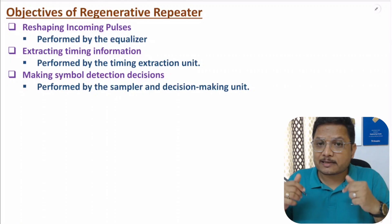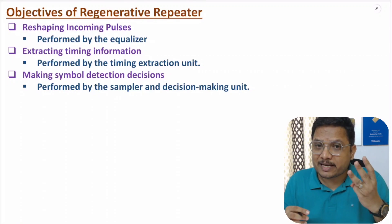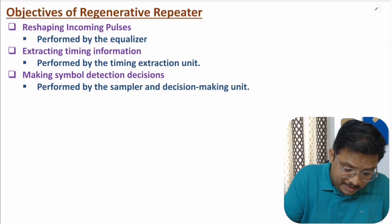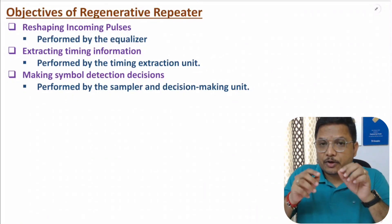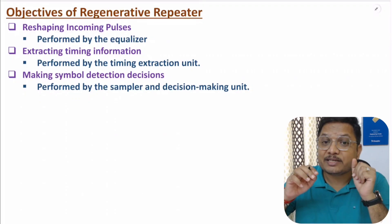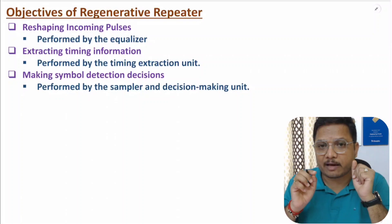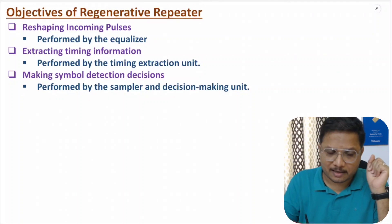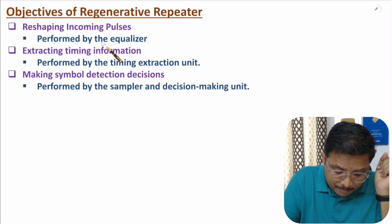Now I'll discuss about how one can regenerate a signal. There are three objectives that you need to understand. First is reshaping of incoming pulses. Due to additional noise with the signal, there will be shape distortion, and that can be eliminated with the use of an equalizer. So reshaping of incoming pulses is performed by the equalizer.